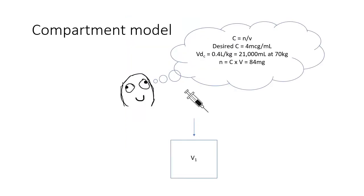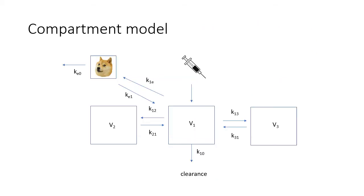Induction kinetics, according to traditional modelling, goes like this. We have a central compartment, we have a desired initial concentration — concentration equals amount divided by volume. We rearrange the equation, punch in the numbers, and we get a loading dose or an induction dose. The drug then distributes into and redistributes out of the peripheral compartments and the effect site.